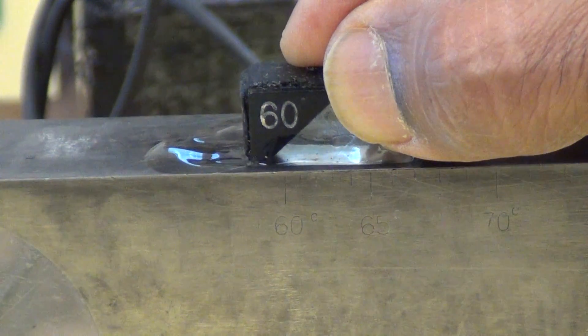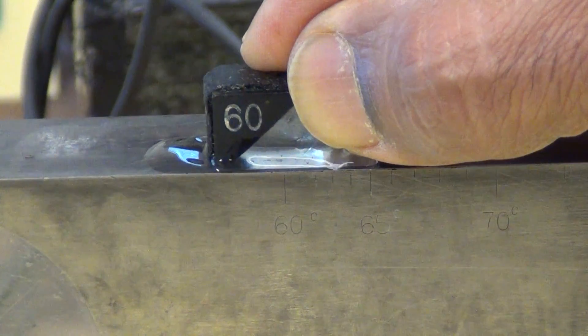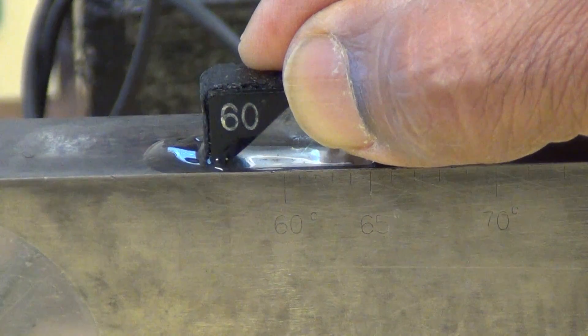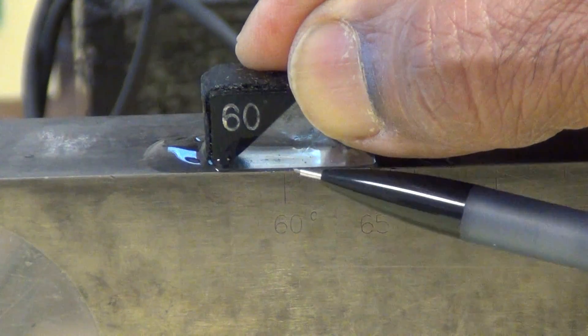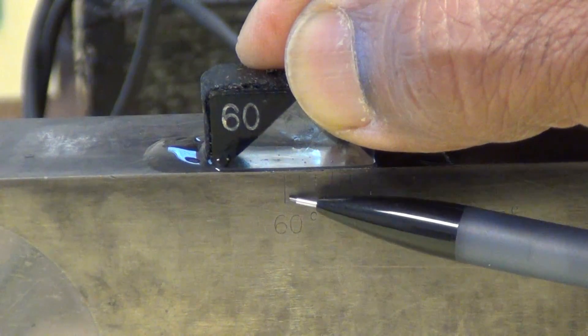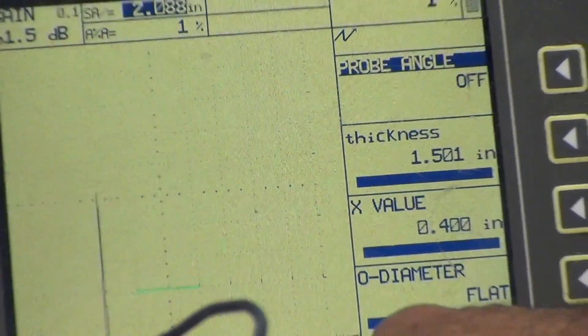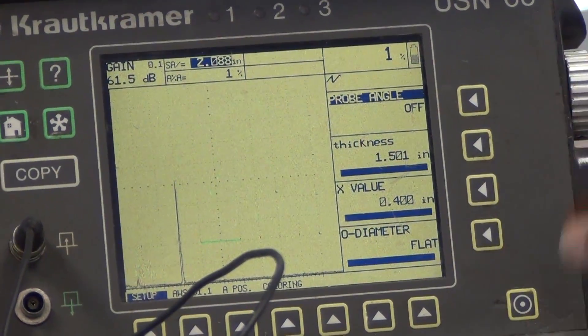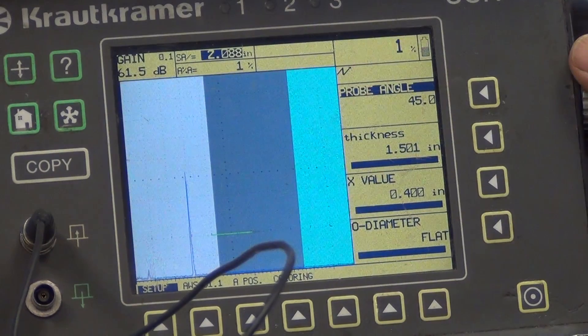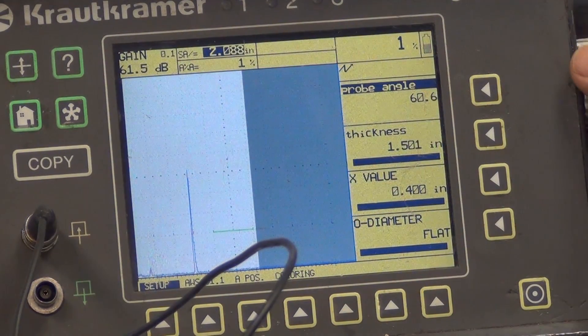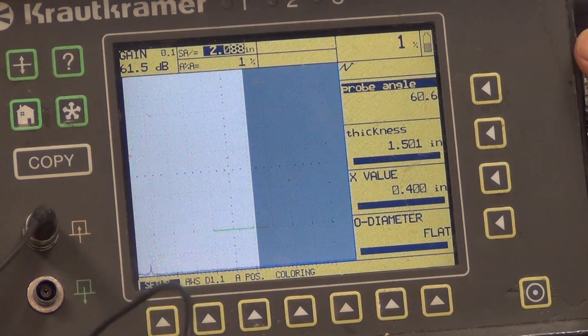So now we peak up the signal again to find the actual refracted angle. Once the signal is peaked, then we read the actual refracted angle and in this case it is about 60.5 right there. So that is the actual refracted angle, 60.5. Then we have to go to the trig function, enter the actual refracted angle which is right here. 60.5.